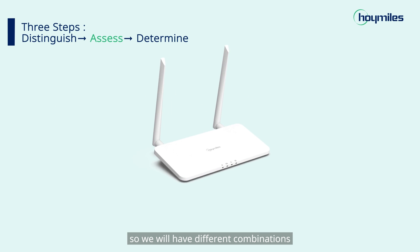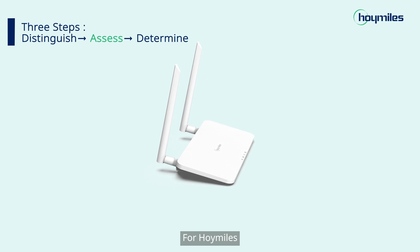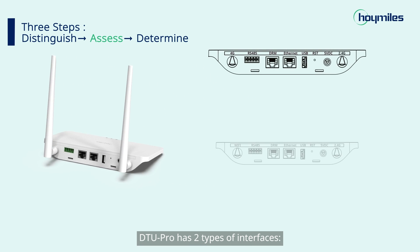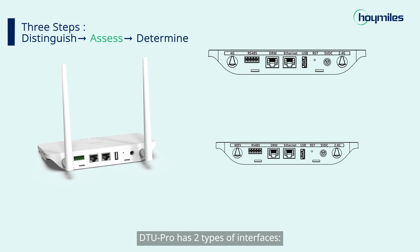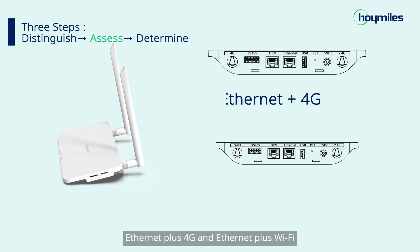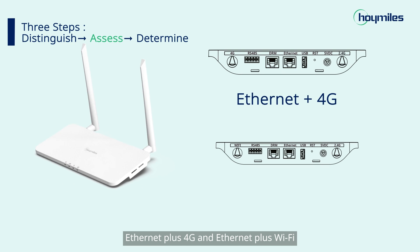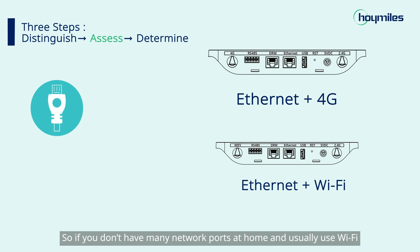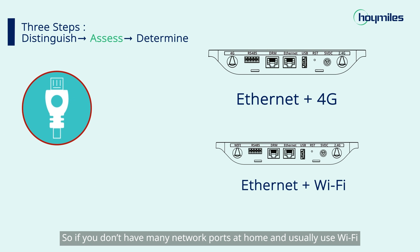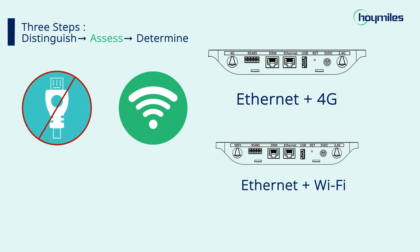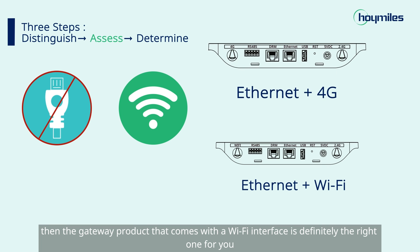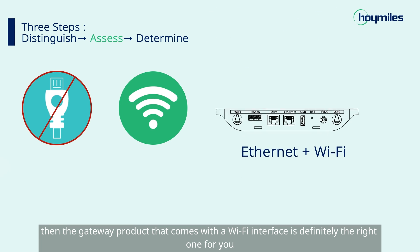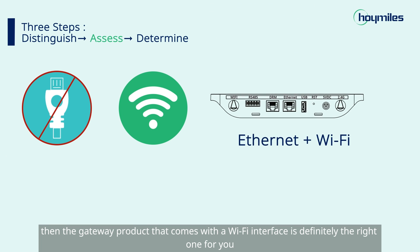For Hoymiles, DTU-Pro has two types of interfaces: Ethernet plus 4G, and Ethernet plus Wi-Fi. So if you don't have many network ports at home and usually use Wi-Fi, then the gateway product that comes with the Wi-Fi interface is definitely the right one for you.